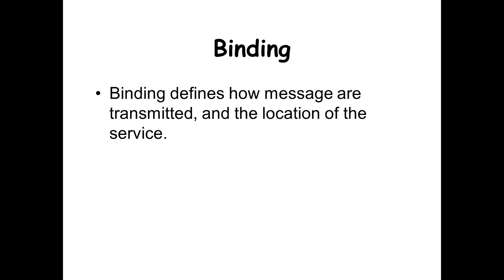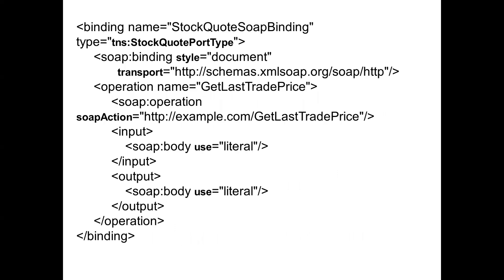The next component is binding. Binding will tell you how a message is transmitted and also the location of the service. Generally for transmitting, we use SOAP, that is Simple Object Access Protocol. In the next video lecture, we will discuss about the SOAP protocol. For binding, you give the name, the type, and using the SOAP protocol we send the messages — here we have SOAP binding, SOAP operation, and SOAP body.